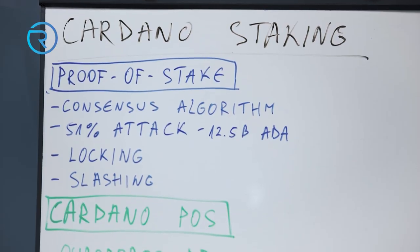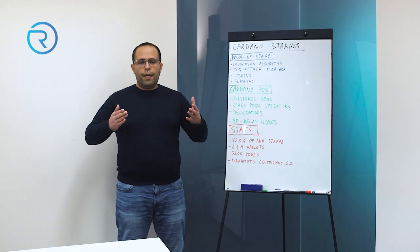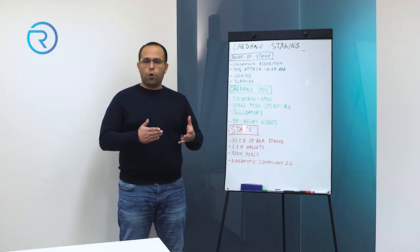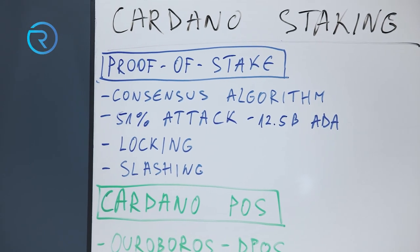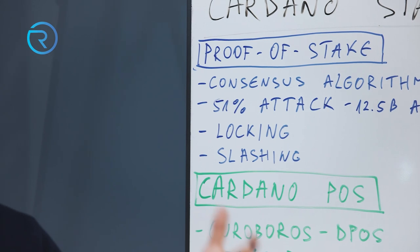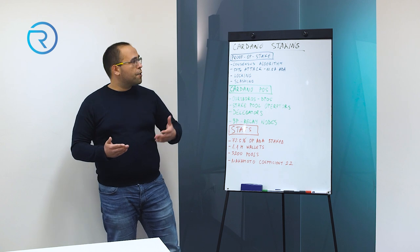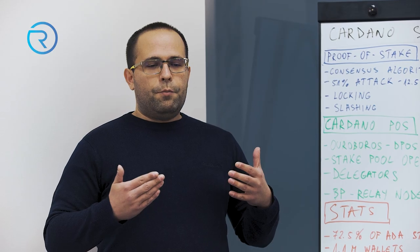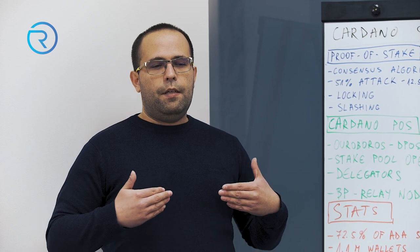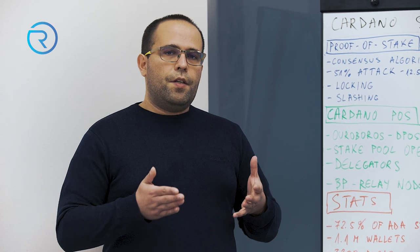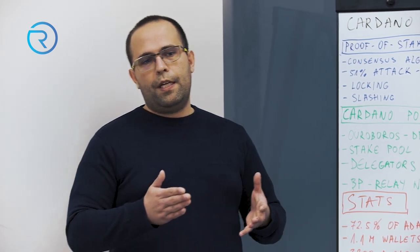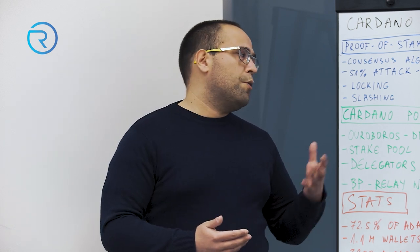In a proof of work consensus algorithm, we have the notion that we have to do some kind of work to confirm and validate transactions on the network, to create new blocks and add them to the blockchain. We do this work by performing intense mathematical calculations, and for that we need a lot of energy — hence it's called proof of work. So in proof of work algorithms, it's imperative that you input the necessary work to validate transactions and to mint new blocks and add them to the blockchain.